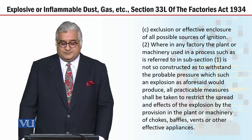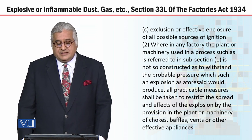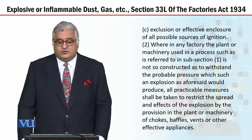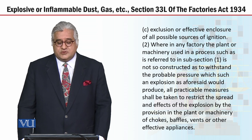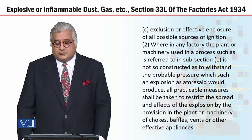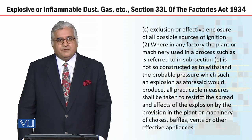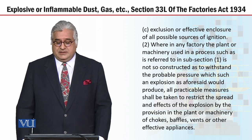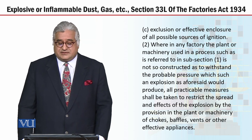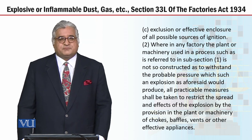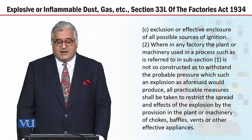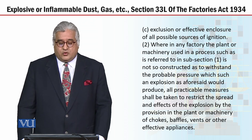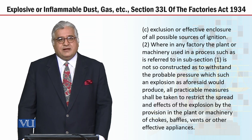Subsection 2: Where in any factory the plant or machinery used in a process such as is referred to in subsection 1 is not so constructed as to withstand the probable pressure which such an explosion as aforesaid would produce, all practicable measures shall be taken to restrict the spread and effects of the explosion by the provision in the plant or machinery of chokes, baffles, vents or other effective appliances.